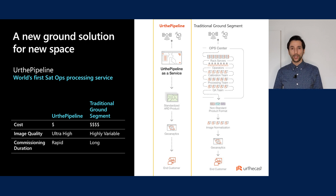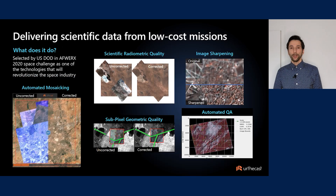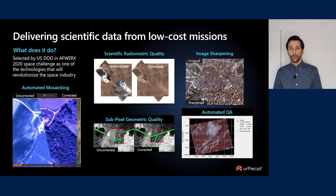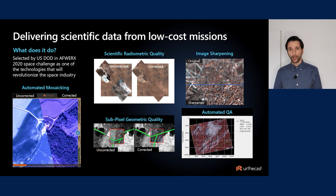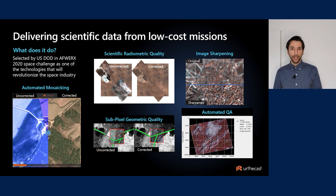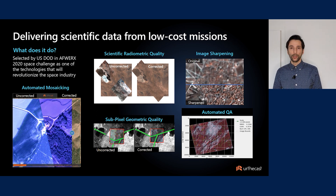The Earth Pipeline also reduces the need for costly operational facilities, software maintenance, processing, calibration, and QA operations, which can save satellite owners millions both in upfront costs and in yearly operational expenses. The Earth Pipeline offers rapid commissioning including sensor characterization and image sharpening, scientific quality radiometric calibration, sub-pixel accuracy geometric processing, automated QA with a guaranteed SLA, and high quality mosaicing capabilities.